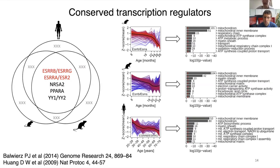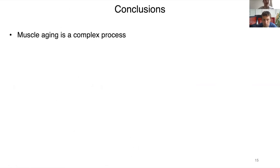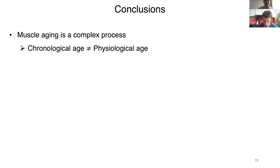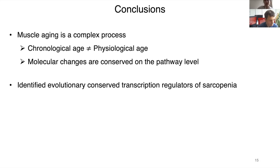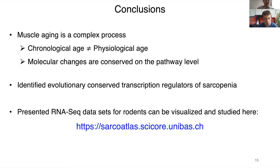Enrichment analysis in DAVID demonstrated that these targets all regulate similar processes related to mitochondria, which is a known target of muscle aging. In conclusion, muscle aging is a complex process. The chronological age is not equal to the physical state of the muscle. Molecular changes are conserved on the pathway level and not the gene level. Several conserved regulators were identified in sarcopenia, and all presented datasets for rodents can be visualized via the link provided.